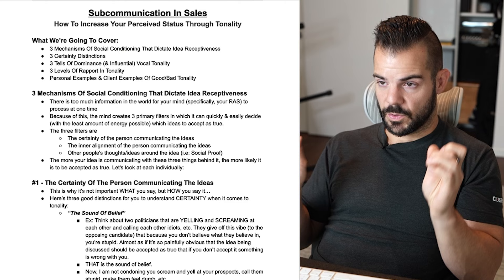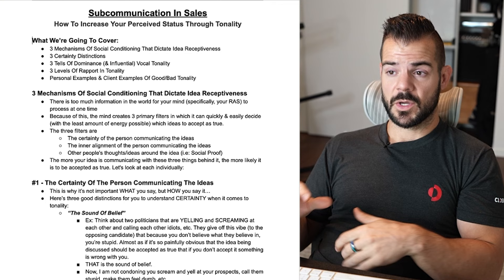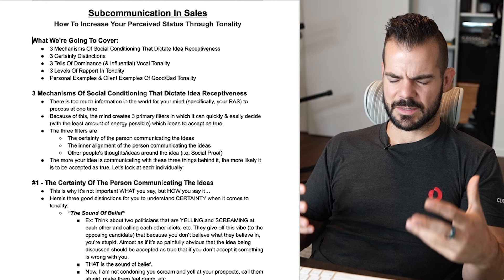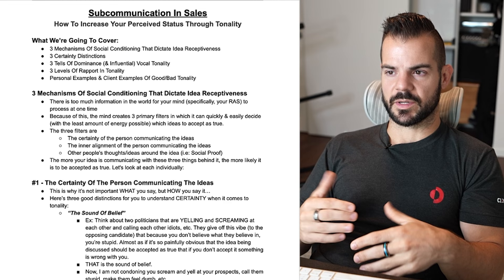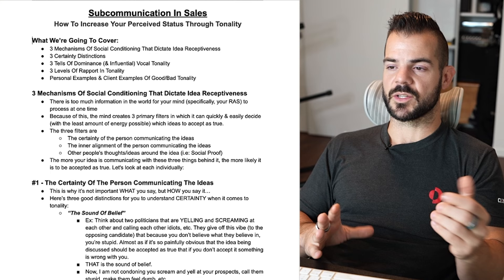So what are we going to cover? Three mechanisms of social conditioning that dictate idea receptiveness. Three certainty distinctions. Three tells of dominance — and think of dominance not as dominating your prospect, but more like leadership and certainty. Three levels of rapport in tonality. And then we'll go through some examples at the very end. Let's get into it.